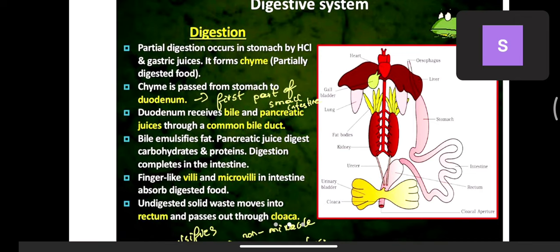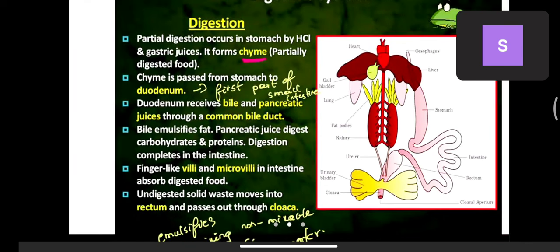Partial digestion happens in the stomach, and the partially digested food is called chyme. This chyme passes from the stomach to the first part of the small intestine, called the duodenum. The duodenum receives bile from the gallbladder and pancreatic juices from the pancreas through a common bile duct, where complete digestion takes place.